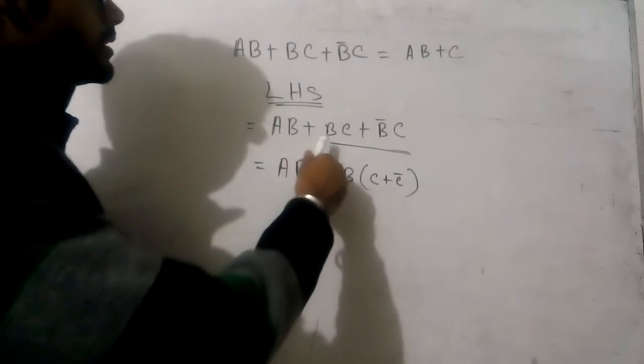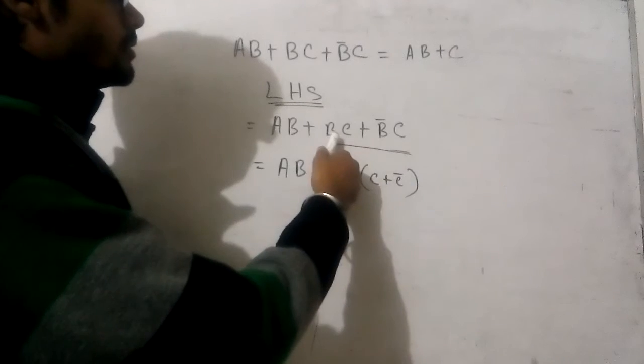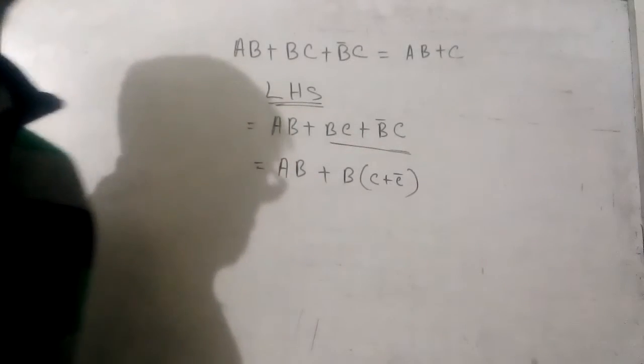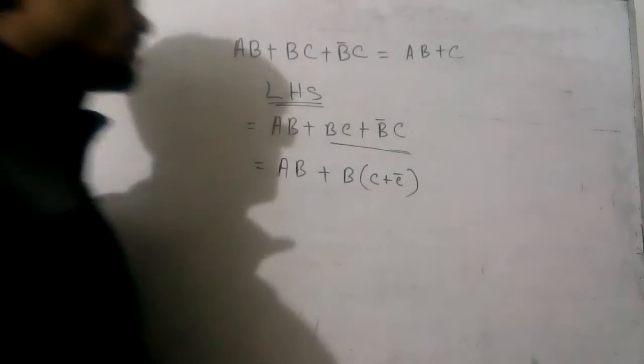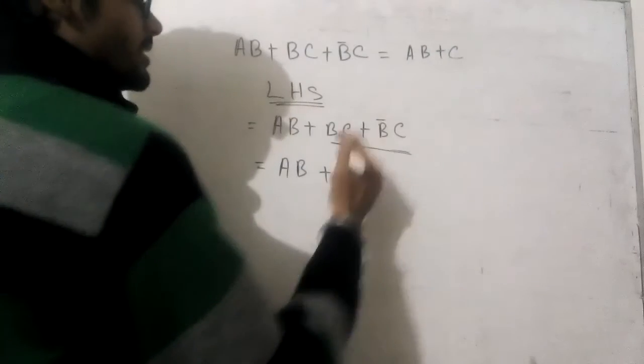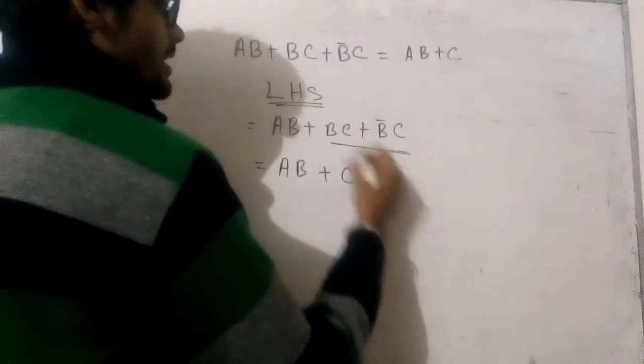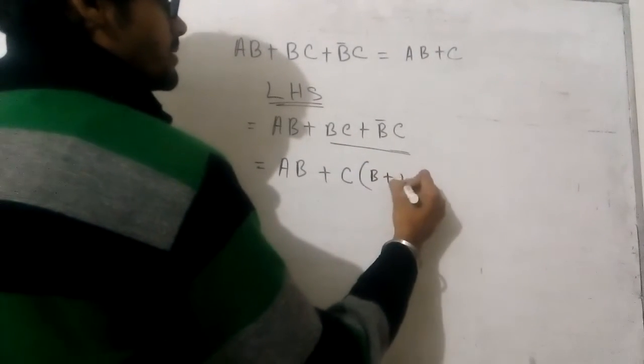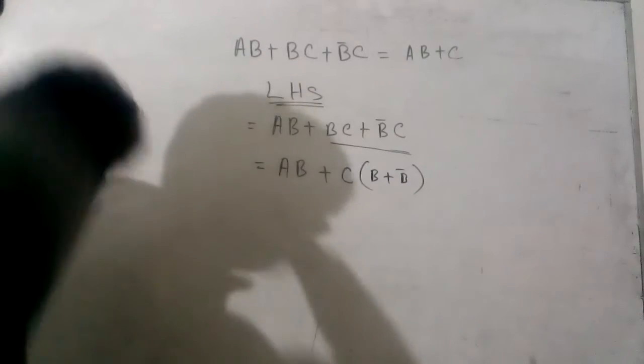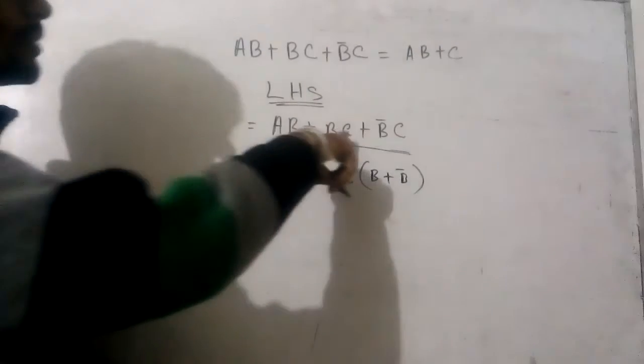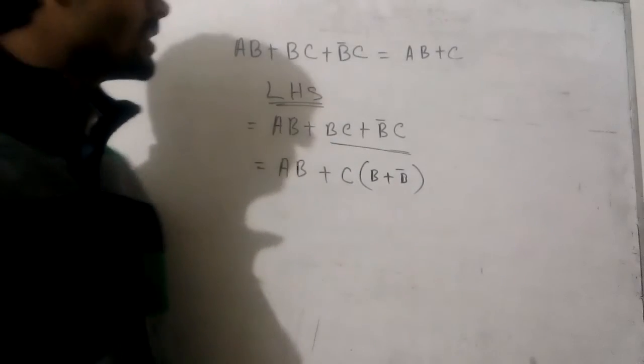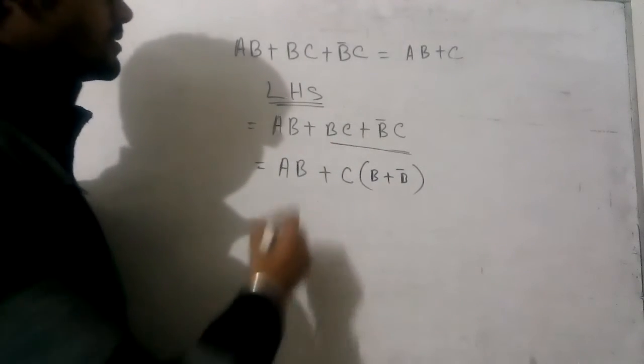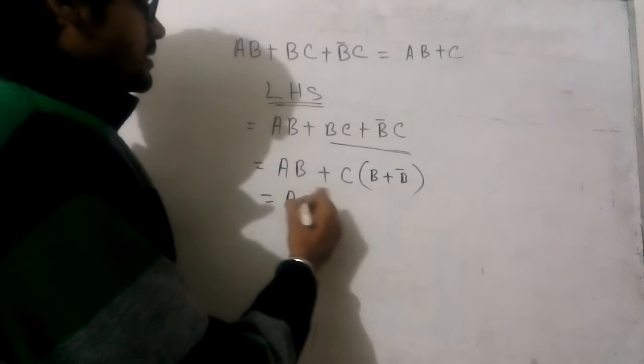Or you can think like that, B is common from these two. B is common, but there is B not. Can I take the common? Oh yes, yes. Sorry, sorry, my mistake. Actually, C is common here, and B plus B bar. C is common here and here. And this matches the principle of distributive law.